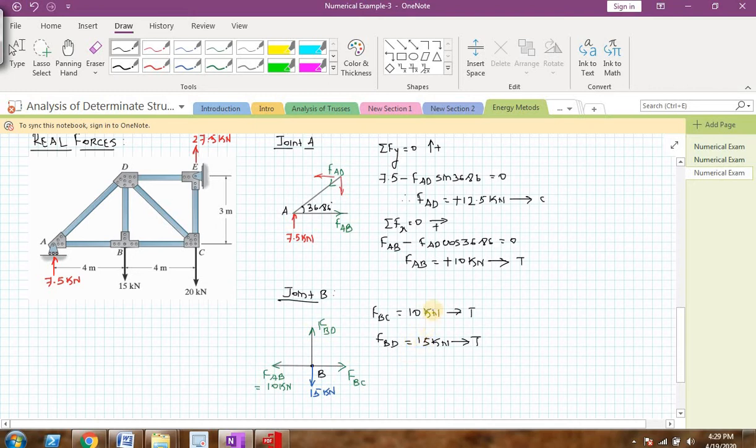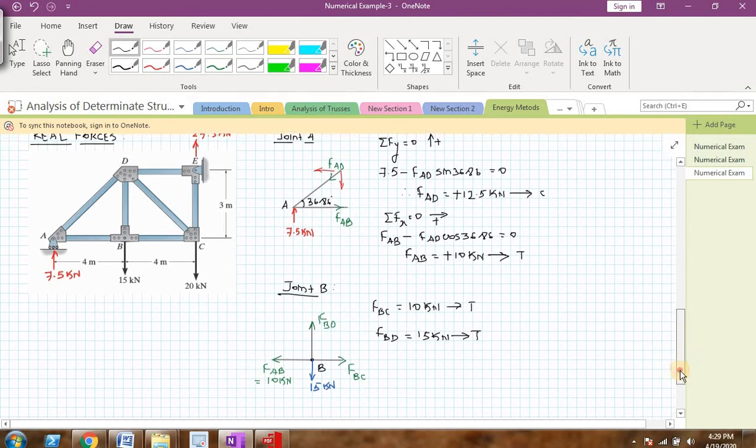FBC is 10 kN tension and FBD is 15 kN. That also will be under tension. You can apply equilibrium equation and you can check the correctness of these answers, but by inspection, you can directly write that. Now, we have found the forces in the member AD, AB, BC and BD. Similarly, likewise, you can choose each joint separately and try to find the forces in the other members. I will not try to do that. I will directly summarize the values of virtual forces and real forces using a tabular format.